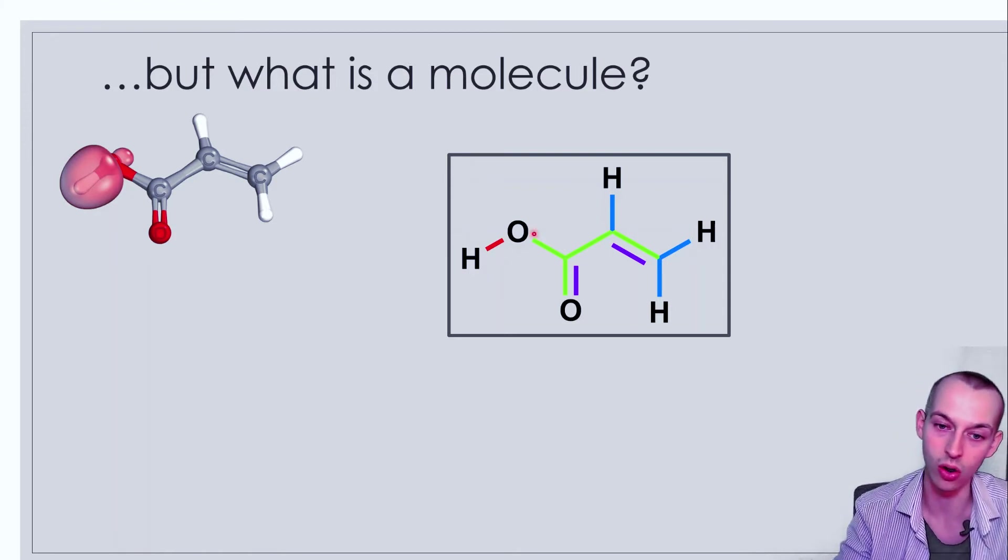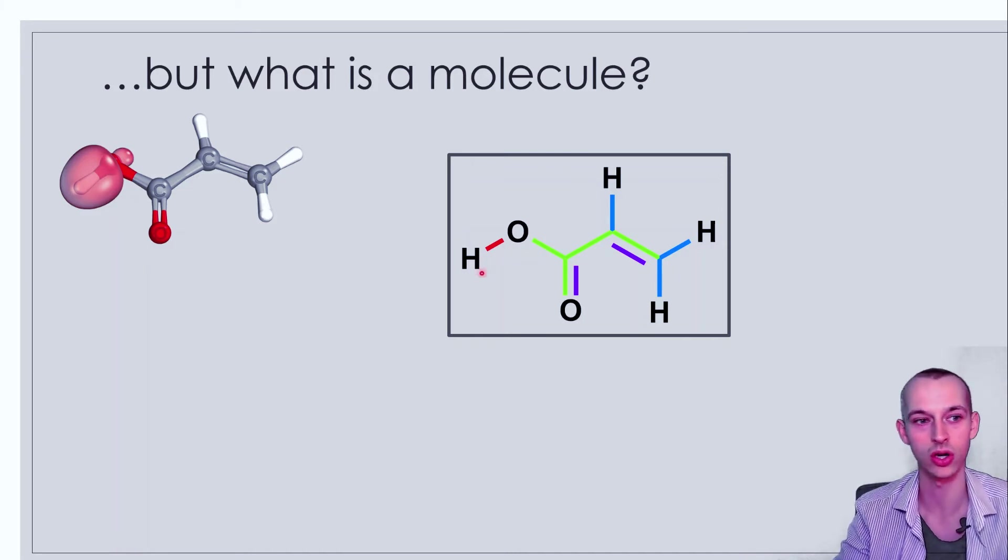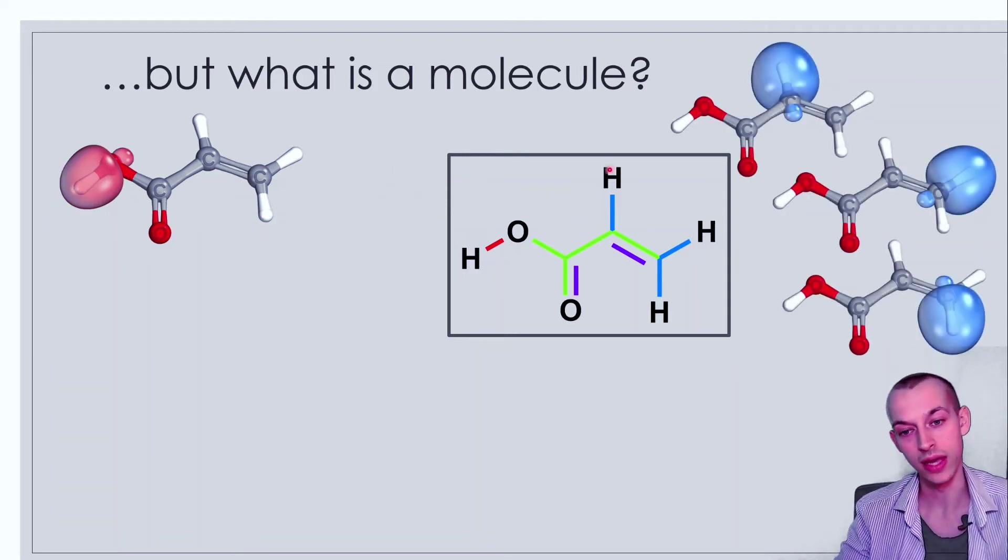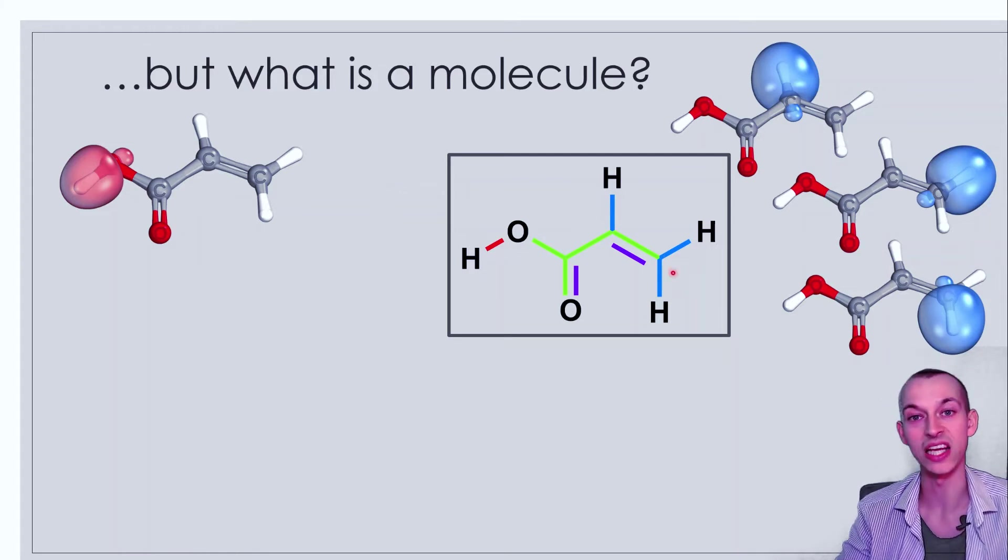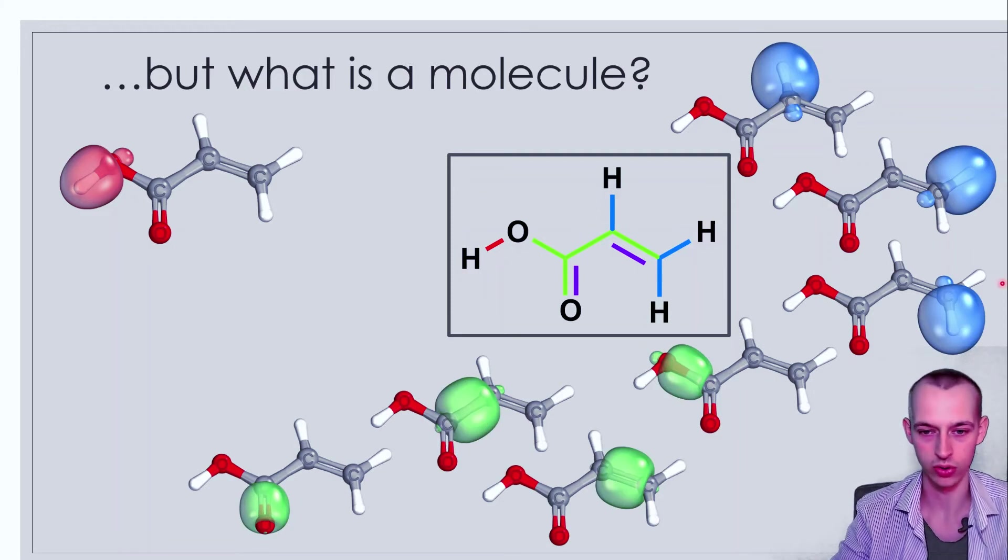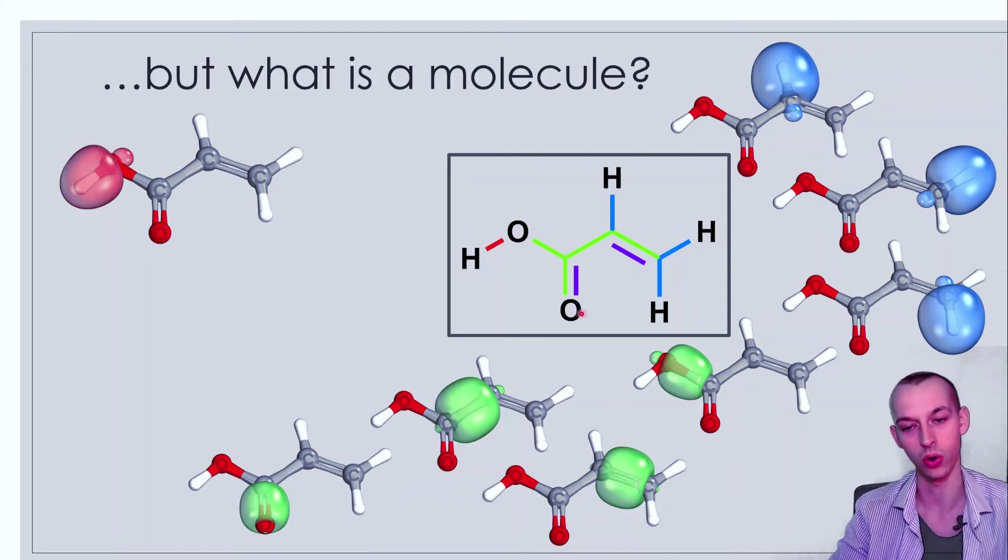We can actually look at the orbitals that represent the different bonds. For example, here we have this OH bond, this oxygen-hydrogen bond, and we can see that's represented by this orbital. In blue, we have all these CH bonds—carbon-hydrogen bonds—and we can see them on this side. In green, we have the main backbone with all the carbon-to-carbon and carbon-to-oxygen bonds.